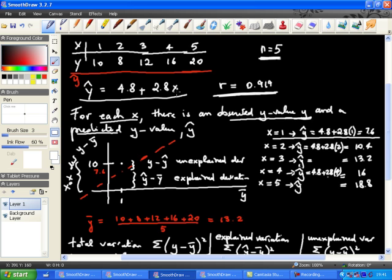so 4.8 plus 2.8 times 1 is 7.6. I drew the 7.6, so I drew the y-hat and I drew the y. And so basically, you see, you have these two quantities. This vertical quantity in here is the difference between the 7.6 is your predicted value. So it's the difference between the predicted and the mean value. That represents the explained variation.